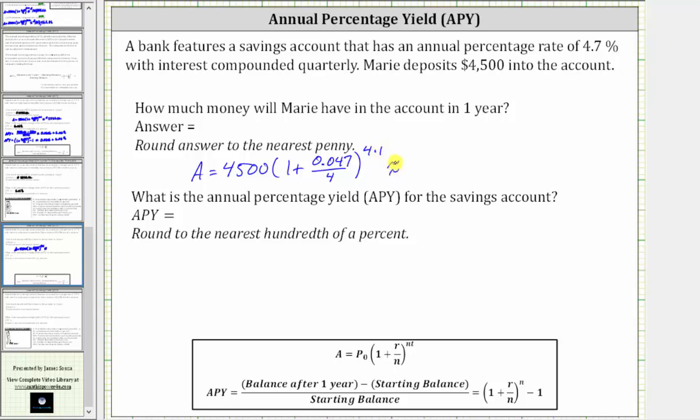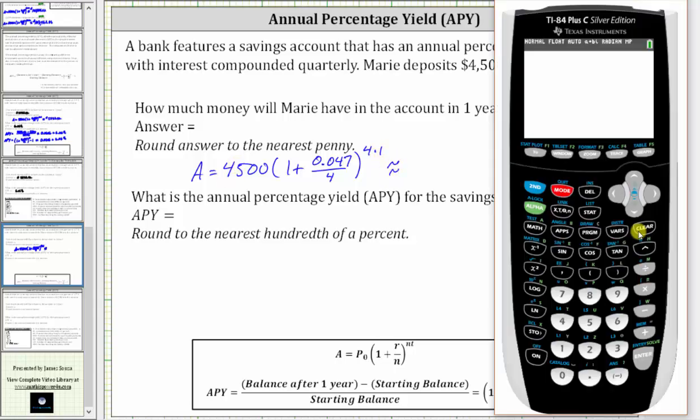Now we'll go to the calculator and round to the nearest cent. We enter 4,500 times the quantity one plus 0.047 divided by four. This is raised to the power of four times one, or four. We press the exponent key, four, and then enter. To the nearest cent, the account balance after one year is $4,715.26.